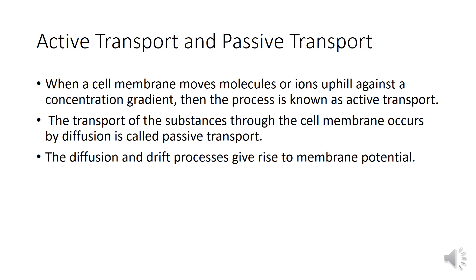Now we will see about active transport and passive transport. When a cell membrane moves molecules or ions uphill against a concentration gradient, the process is known as active transport. The transport of substances through the cell membrane by diffusion is called passive transport. The diffusion and drift process gives rise to membrane potential.